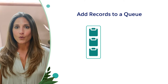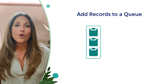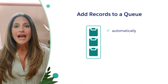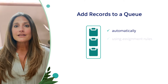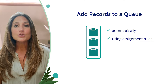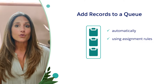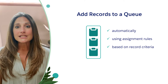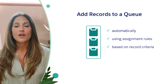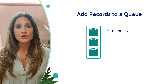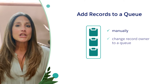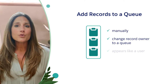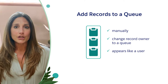You can add records to a queue a couple of different ways. One, they could be added automatically — admins can create assignment rules to add records to a queue when they are created based off of specific record criteria. Or manually, change the record owner of the record to a queue, which will appear like a user.